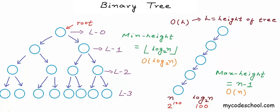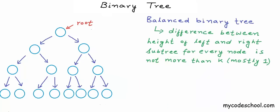Quite often we want to keep the height of a binary tree as small as possible, or most commonly we say we try to keep the tree balanced. We call a binary tree a balanced binary tree if for each node the difference between the height of the left and right subtree is not more than some number k, where k is mostly 1.